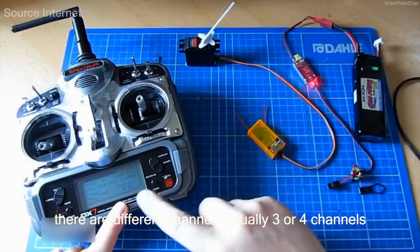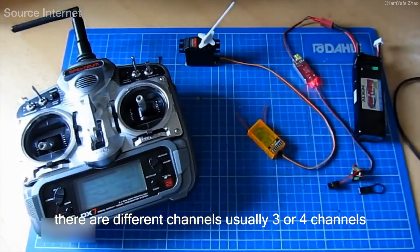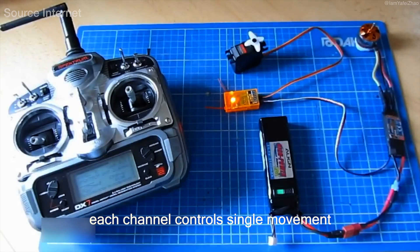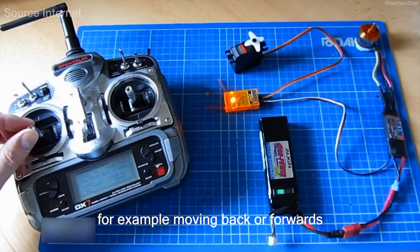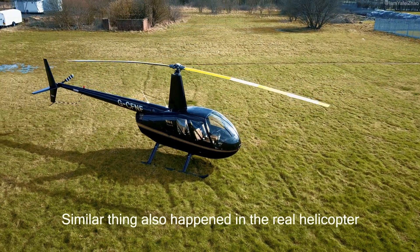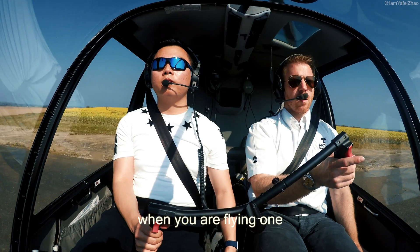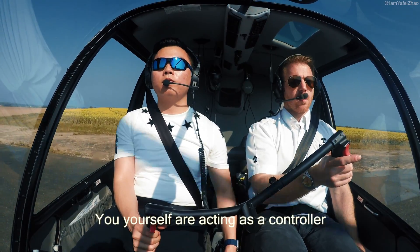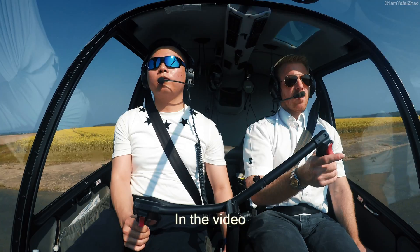Inside the remote controller, there are different channels, usually three or four channels. Each channel controls a single movement. For example, moving back or forward, which is the throttle. A similar thing also happened in the real helicopter. When you are flying one, you yourself are acting as a controller.